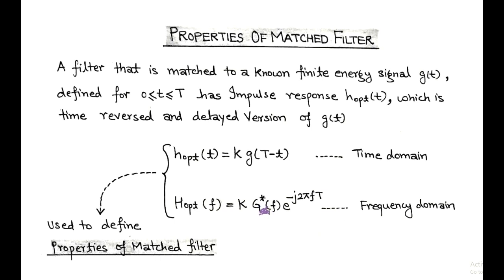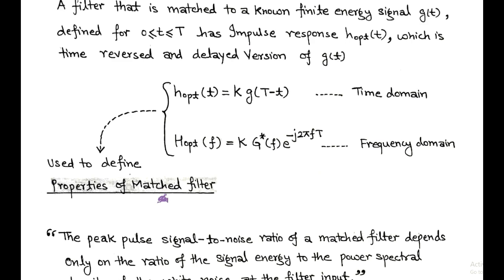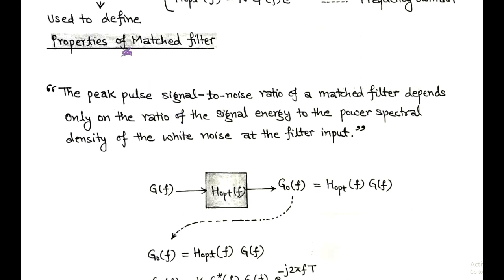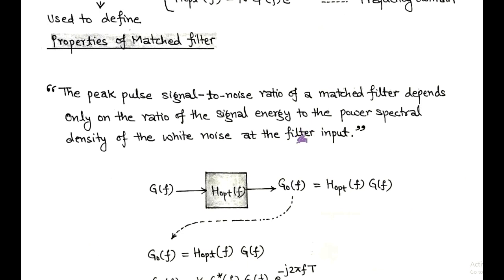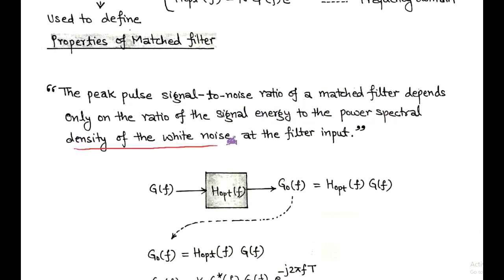Now, for the discussion of the properties of matched filter, we use the optimum impulse response. According to the first property, the peak pulse signal to noise ratio, or maximized signal to noise ratio, of the matched filter depends only on the ratio of the signal energy to the power spectral density of the white noise. Here we derive this peak pulse signal to noise ratio as equal to the ratio of signal energy upon power spectral density of the white noise.